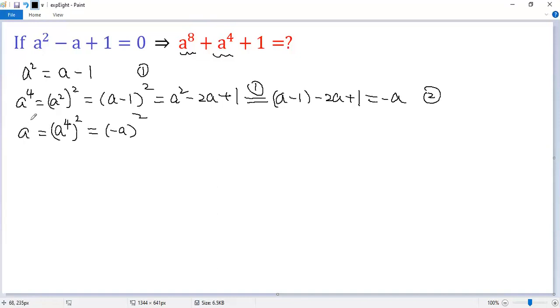But we know this equals A to the power of 8. For the right side, A squared. Now using condition 1 again, we get A minus 1.